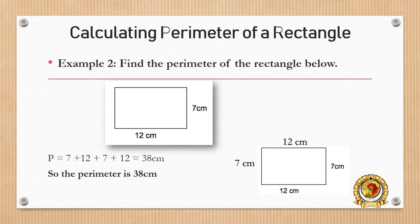So P, which is perimeter, equals 7 plus 12 plus 7 plus 12, which is equal to 38 cm. So the perimeter is 38 cm.